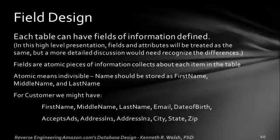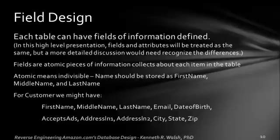Fields are atomic pieces of information — that just means they're indivisible. When we get down to the level of the field, it should be just one piece of information. A simple example is the name. We don't store the name as a single field, but break it out into three fields: first name, middle name, and last name, because those are indivisible. The reason we do this is so that relational databases can use this information in lots of different ways. One report might print first name then last name; another might print last name, comma, first name. If we store the full name in a single field, it would be hard to display it differently.